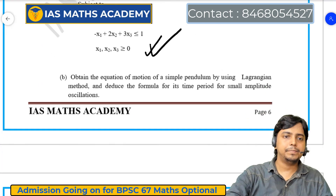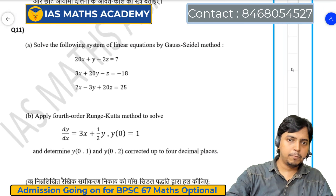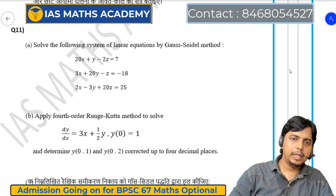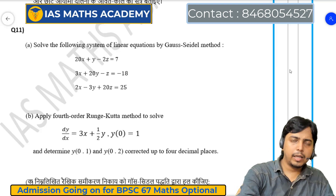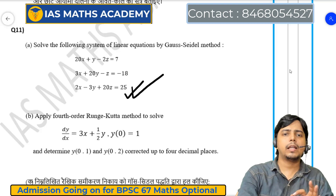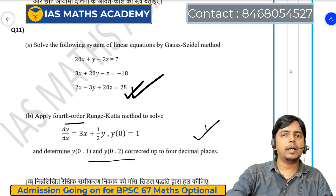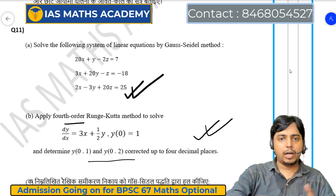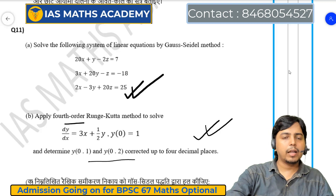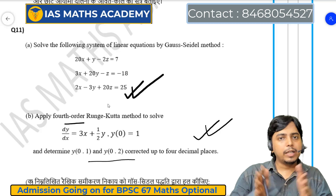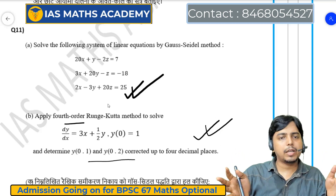Question number 11A में numerical analysis का question है — Gauss-Seidel method और Runge-Kutta method। Elimination technique से system of linear equations solve करते हैं। Runge-Kutta method fourth order लगाना है और इसका table भी लिखना है। किसी भी graduation की किताब में यह topic रहता है। अगर exam में यह नहीं किया तो यह आपकी गलती है — practice की कमी है। Gauss-Seidel और Runge-Kutta method numerical analysis की किसी भी book में मिलता है।